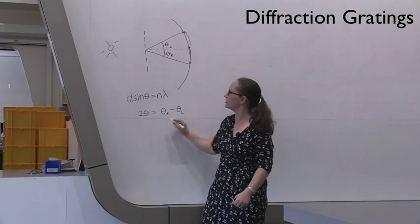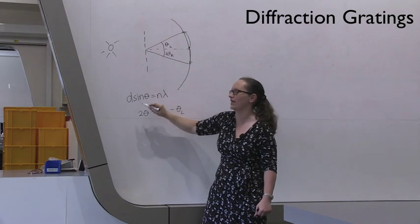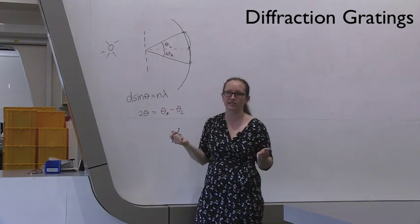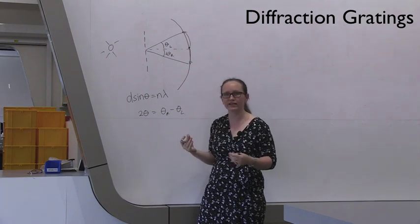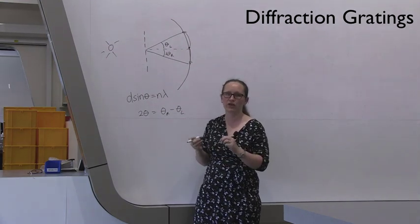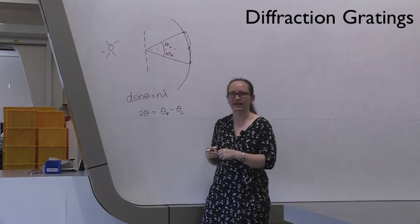So you can use this equation to get theta, and once you know theta, and you know lambda, and you know n, you can work out what d is, the spacing on the grating. You'll then use this d in the second part in order to measure the wavelengths of the lines in the mercury spectrum. I'll show you the equipment now.